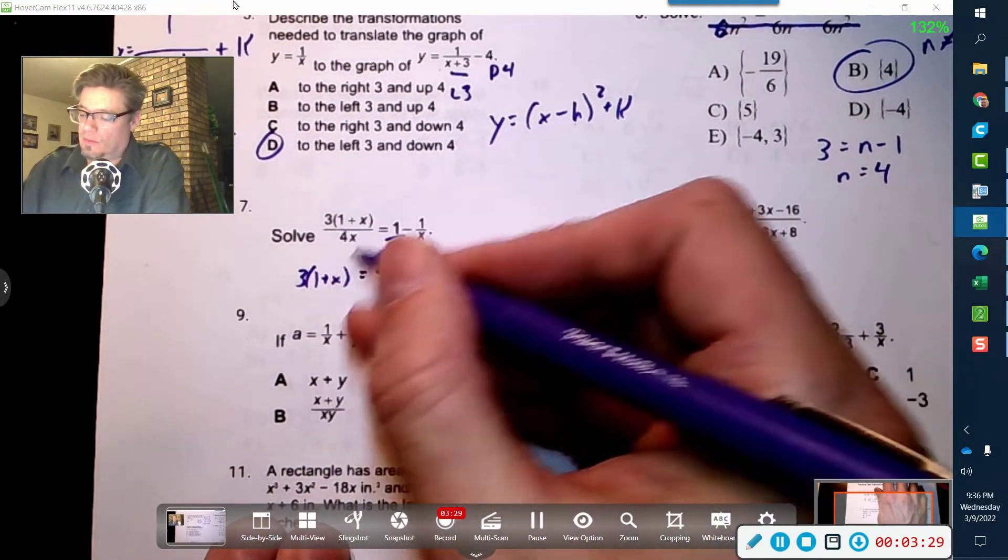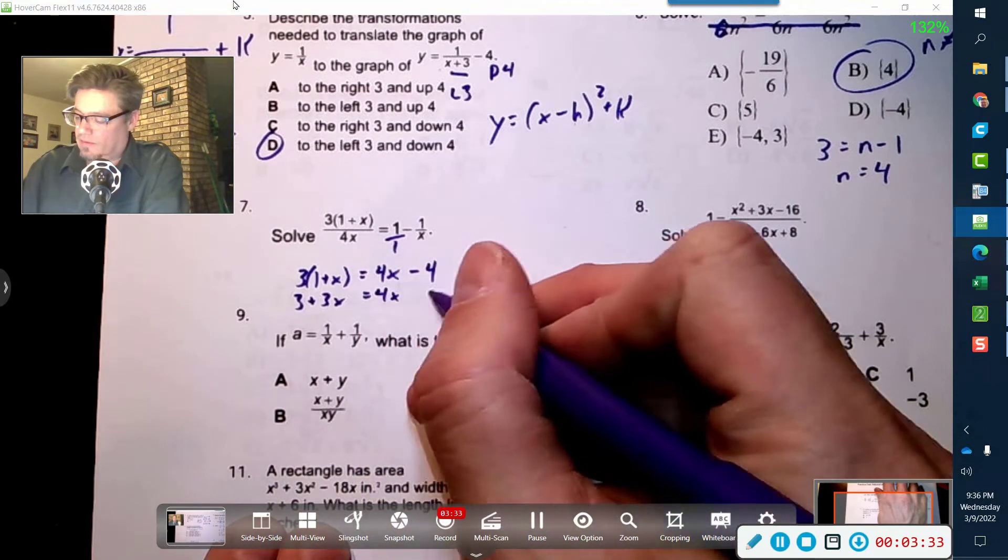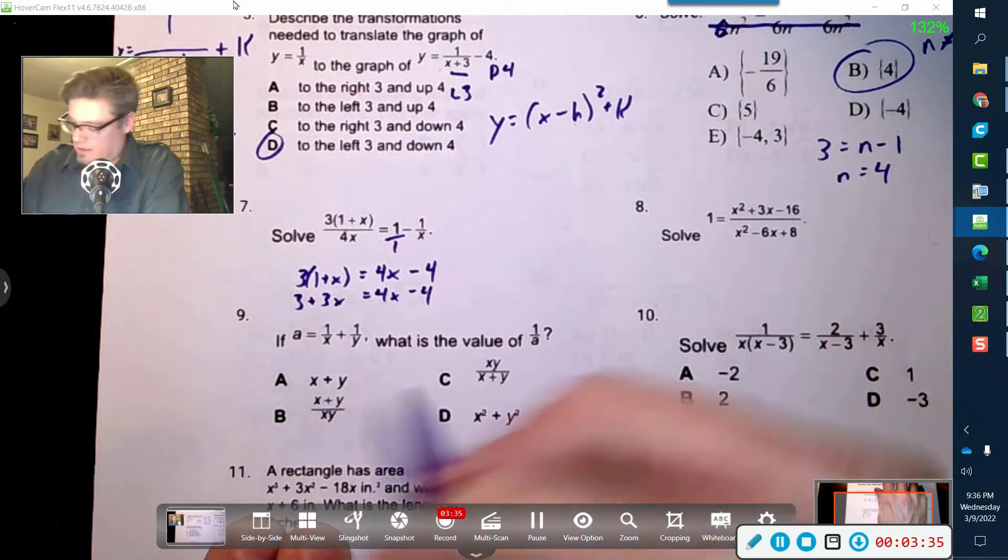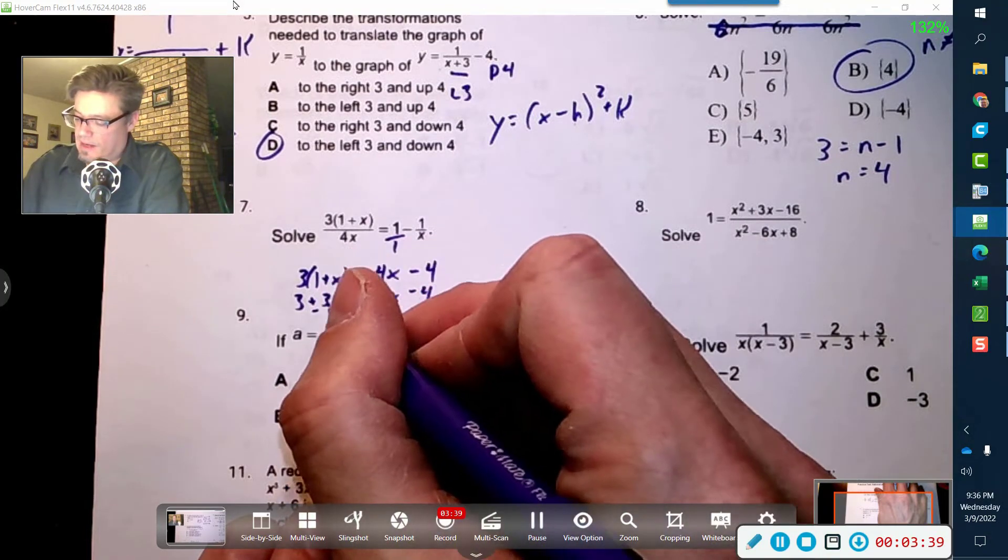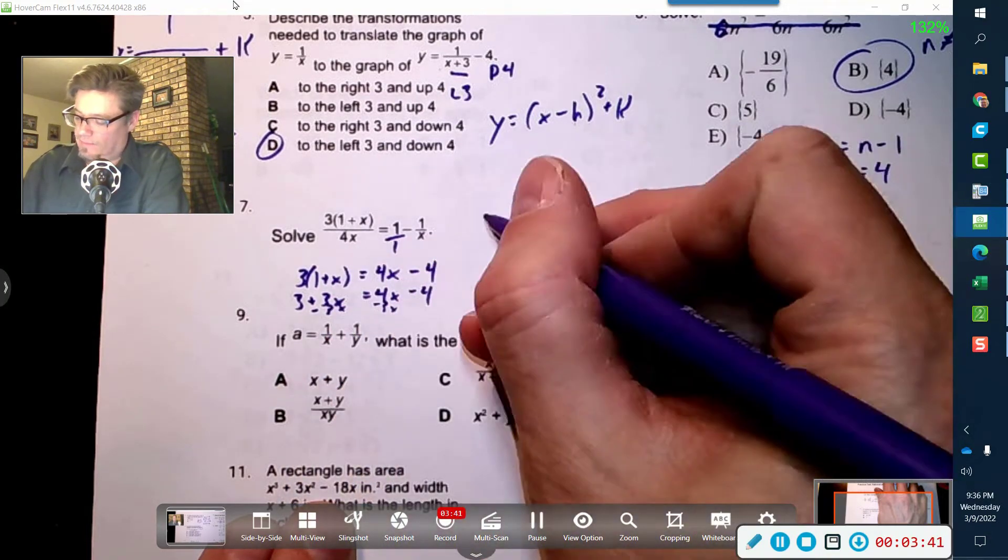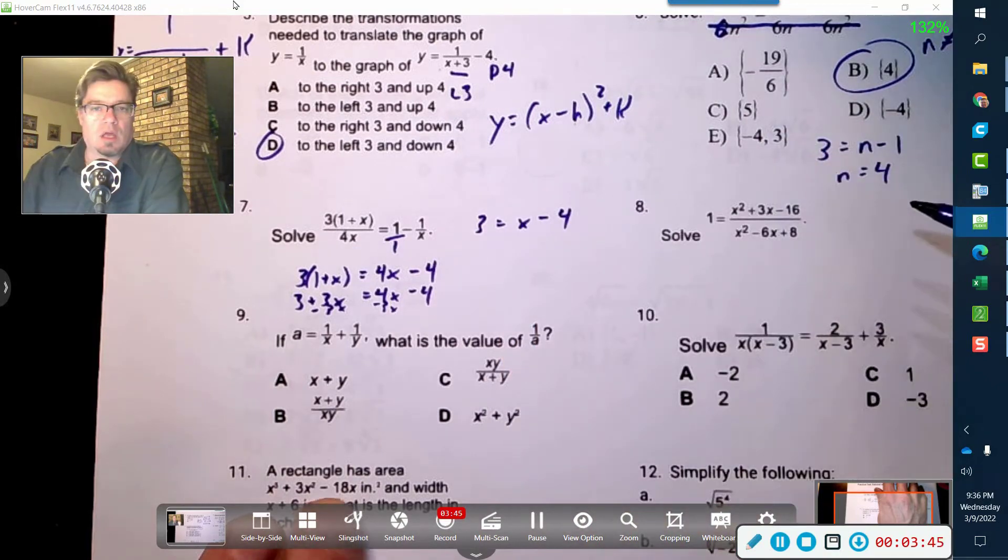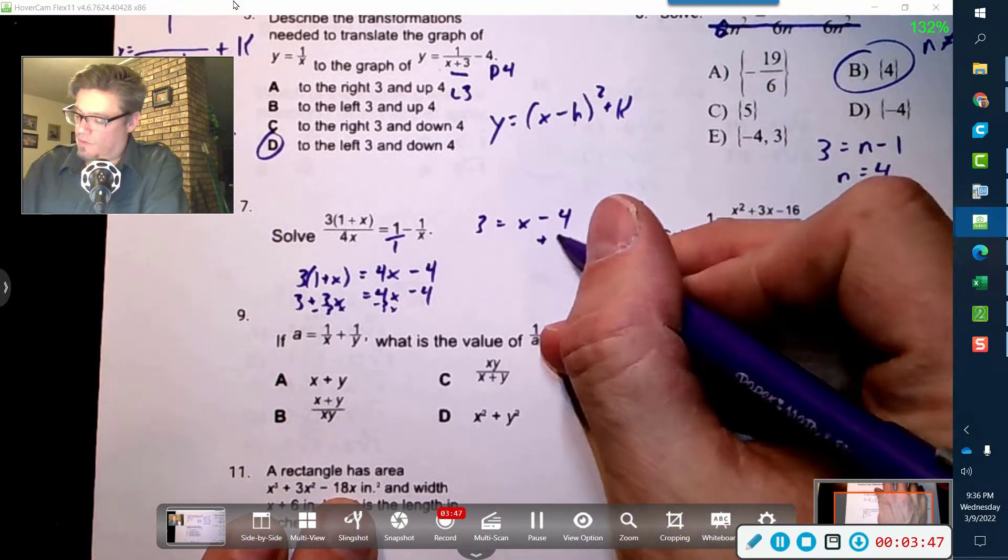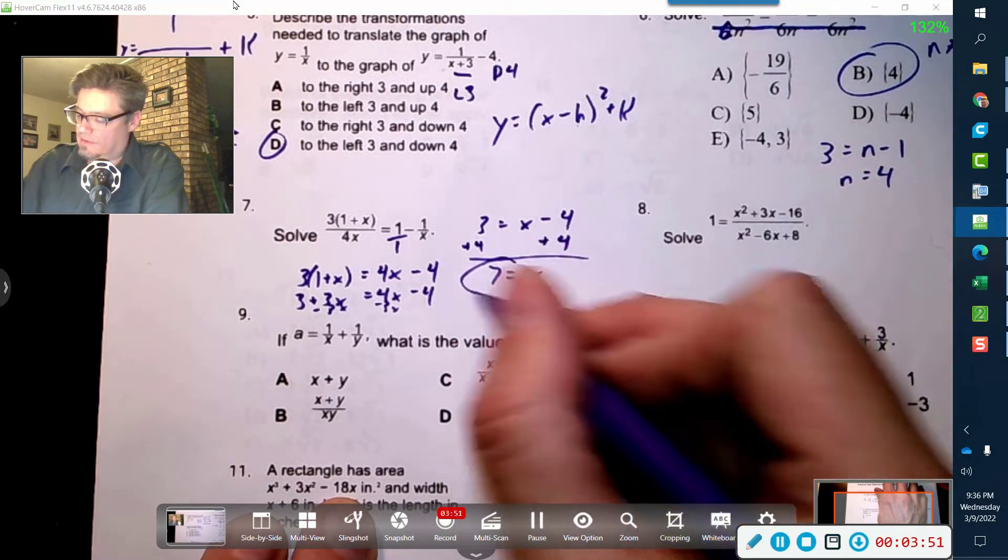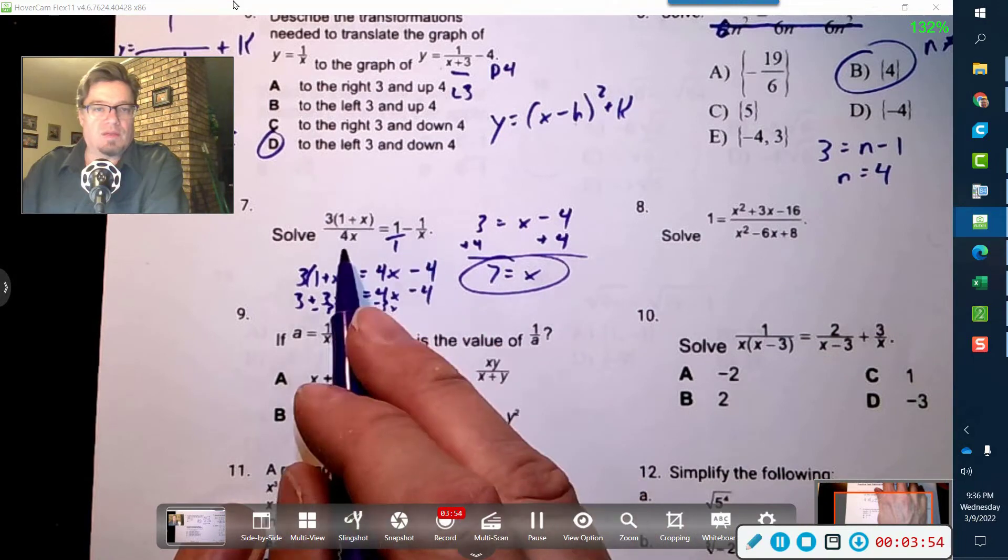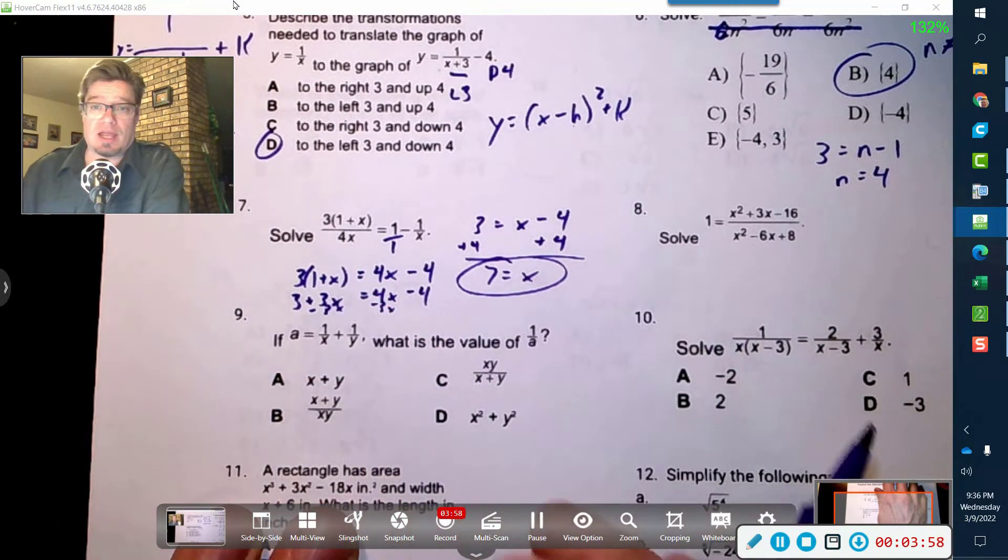Alright, so let's distribute and see what happens here. We get 3 plus 3x equals 4x minus 4, so I'm going to move this 3x over to here, so that negative 3x, negative 3x, I end up with 1x minus 4, and then I'm going to add 4 to both sides. Alright, x equals 7, and the only problem that would give me 0 in the denominator here is if x was 0, so I can't have that.